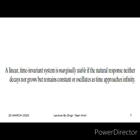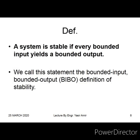Marginally stable systems are not regarded as good, well-behaved systems like stable systems. We want poles to be on the left-hand side of the j-omega axis. If they are on the j-omega axis, that is bad; if they are on the right-hand side of the j-omega axis, that is even worse.